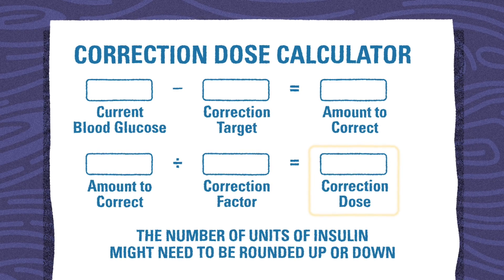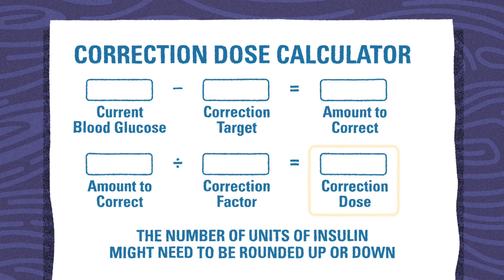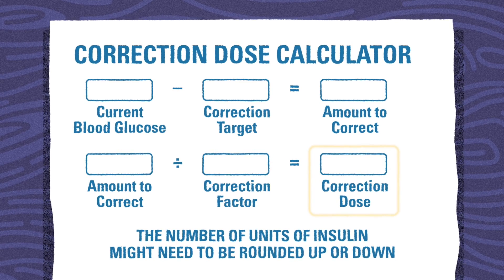You may need to round up or down to the nearest half unit, depending on whether the insulin is given by syringe or by insulin pen.